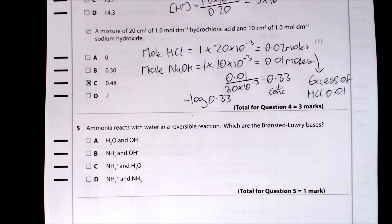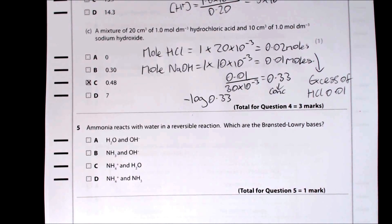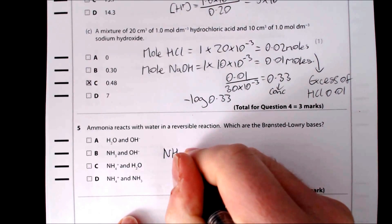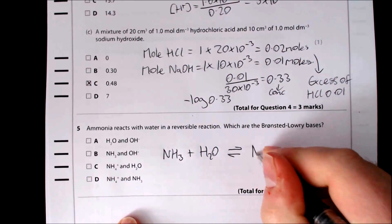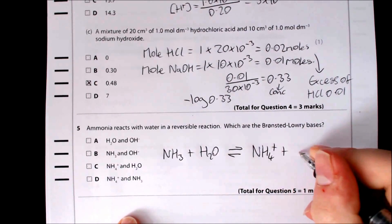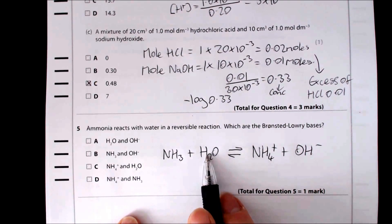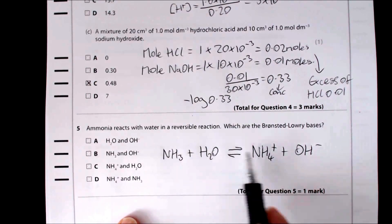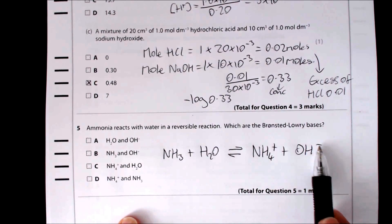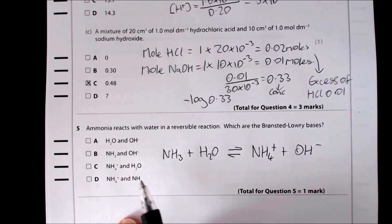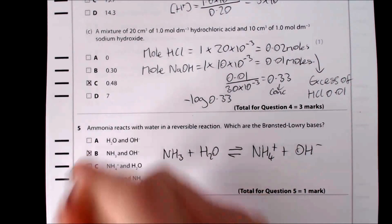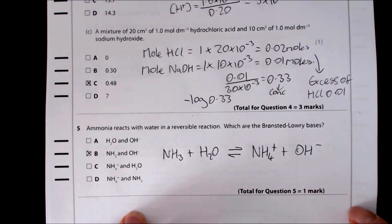Question five: ammonia reacts with water in a reversible reaction — which species are the Brønsted-Lowry bases? A Brønsted-Lowry base is a proton acceptor. In the equation NH₃ + H₂O ⇌ NH₄⁺ + OH⁻, NH₃ accepts a proton (going left to right), and OH⁻ accepts a proton going right to left. So the two Brønsted-Lowry bases are NH₃ and OH⁻, giving answer B.